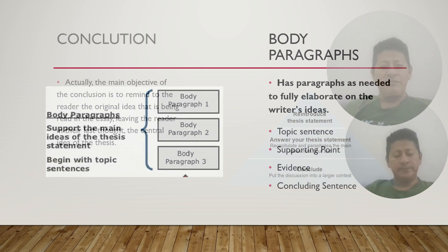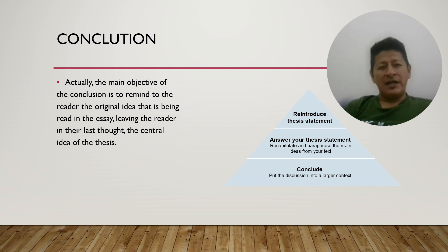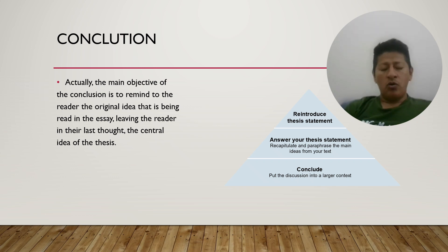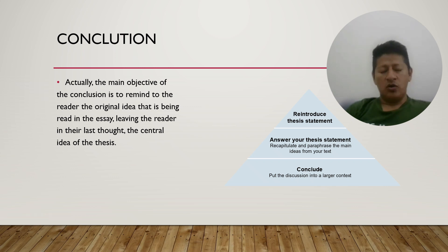Let's go to the next slide. Finally, we have the conclusion. The conclusion is the last part of an essay. The main objective of the conclusion is to remind the reader of the original idea, and you can paraphrase the central idea from the introduction. You can write the conclusion in three different ways: reintroduce the thesis statement, answer your thesis statement by paraphrasing the main idea, or express it in your own words and thoughts — but it has to follow the introduction and the content of the body paragraph.